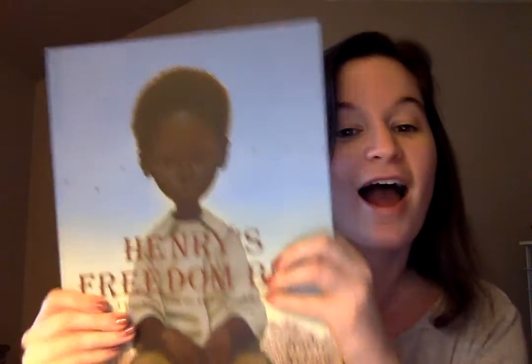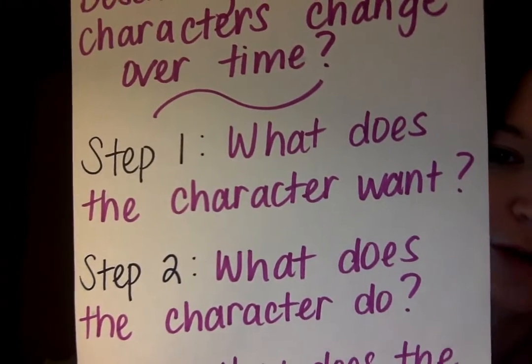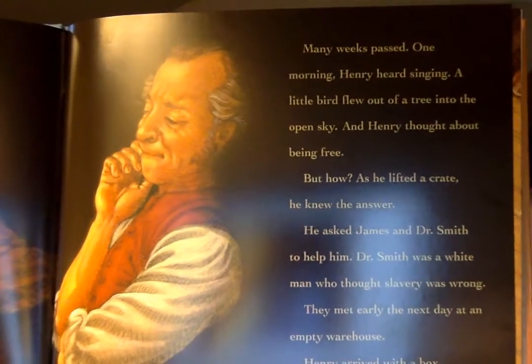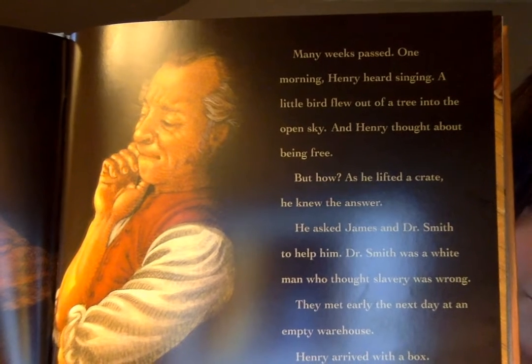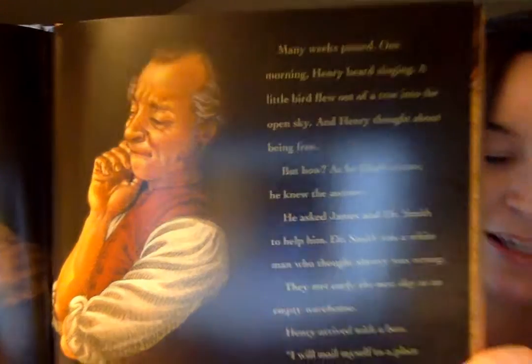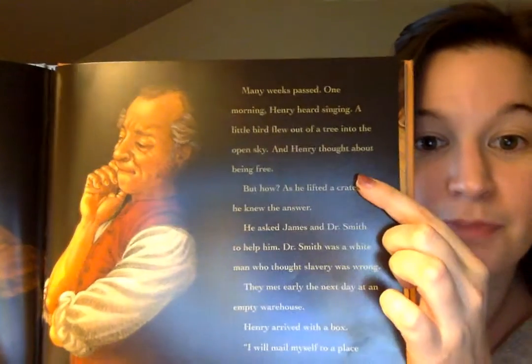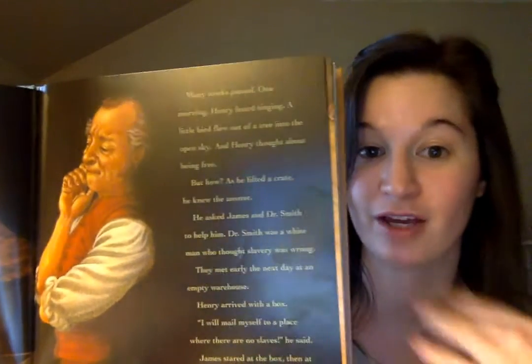Now we're going to practice with our text Henry's Freedom Box. Let's follow our steps to figure out how Henry changes. Step one: what does the character want? Looking at this page, we see Henry talking about how he saw a bird in a tree, and the bird reminded him of being free. Throughout this entire text, all Henry wants is to be a free man — he doesn't want to be a slave anymore.